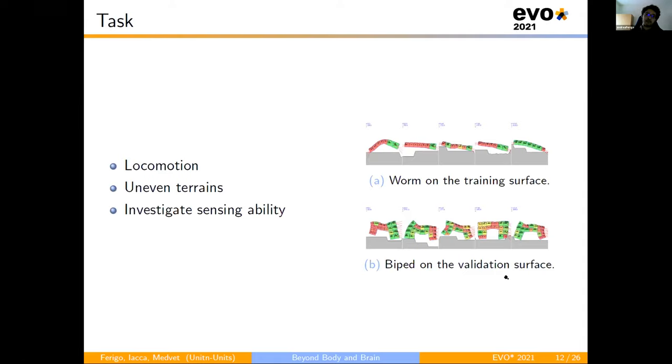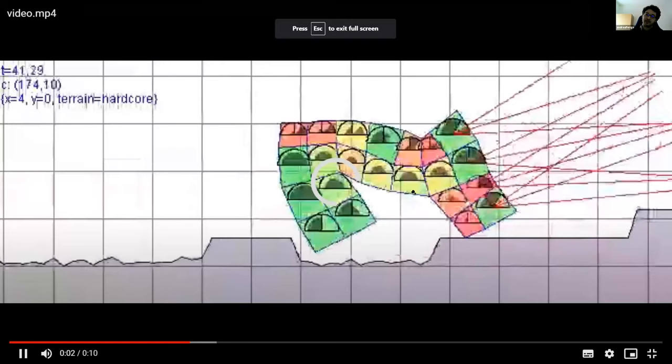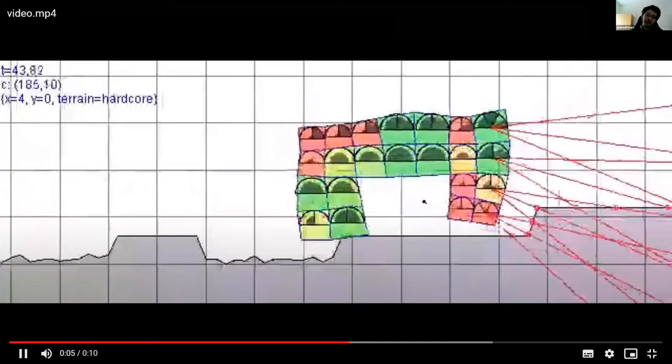As regards to the task, we implemented the locomotion task on an uneven surface composed of the alternation of three elements: a hill, a gap, and an uneven surface, in order to better investigate the sensing ability. Moreover, we used a single terrain for the evolution and tested each best robot at each iteration on another terrain created with another seed. The colors indicate the different rho values. The arches are the sensor readings and the red lines are the layers of the sensors.